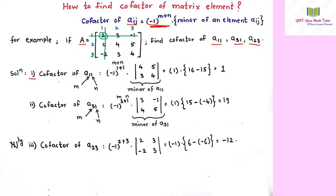Minus 1 to the power 2 equals 1. The determinant of the remaining matrix is 4 times 4 minus 3 times 5, which is 16 minus 15, giving 1. So the cofactor of a11 equals 1 times 1, which is 1.